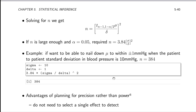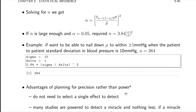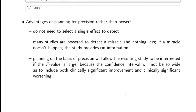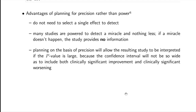Sizing a study on precision means you can estimate something accurately no matter what the value of the thing you're estimating, so you don't really need a null hypothesis. This also allows you to have an interpretation even when you have a large p-value — a large p-value by itself doesn't give you any information other than you didn't reject the null hypothesis, but it doesn't tell you anything definitive.